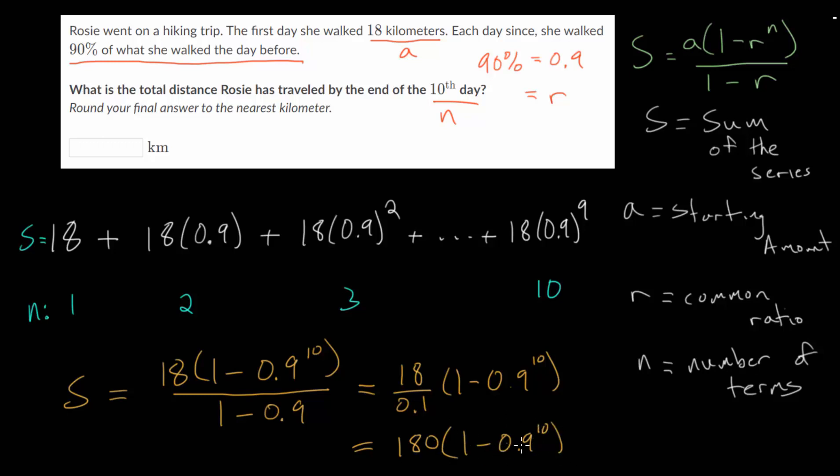And since raising 0.9 to the 10th power is fairly difficult, we can just use a calculator at this point. So when you plug this into your calculator, you get approximately 117.24 kilometers. But we want to round to the nearest kilometer. So that would just be 117 kilometers. So she roughly walked 117 kilometers, and that's what we'll put into our box here.